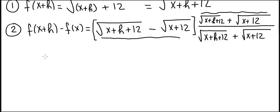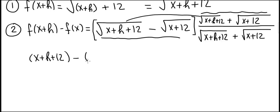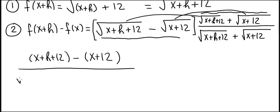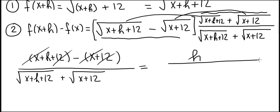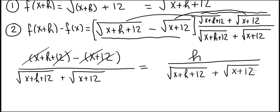When the square roots multiply each other the square root disappears and there's no middle term because they cancel. So square root of x plus h plus 12 minus square root of x plus 12, times square root of x plus h plus 12 plus square root of x plus 12, equals x plus h plus 12 minus (x plus 12). The denominator is square root of x plus h plus 12 plus square root of x plus 12. In the numerator, x minus x is gone, 12 minus 12 is gone, and we're left with h. This is the end of step two.